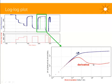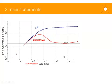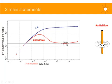I'm not going to go into too much detail for this presentation, but we're going to spend a bit more time on this plot. I've got three main statements for you. The first main statement is: a stabilization on your derivative plot could be indicative of radial flow regime. Radial flow regime is a circular flow towards the well, and that is in the horizontal plane.